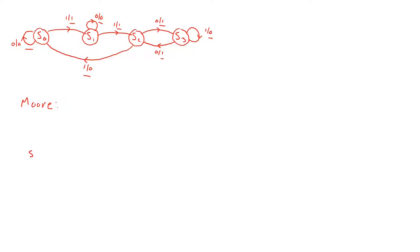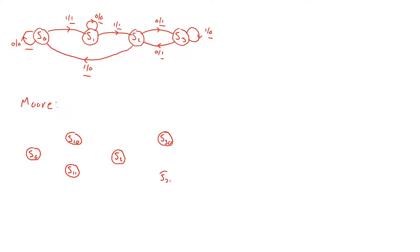Our state machine will be as follows. S0 stays as is. S1 is split into S10, which collects all entering edges that output zero, and S11, which collects all entering edges that output one. S2 stays as is since all its entering edges output a one. S3 is split into S30 for edges outputting zero and S31 for edges outputting one.